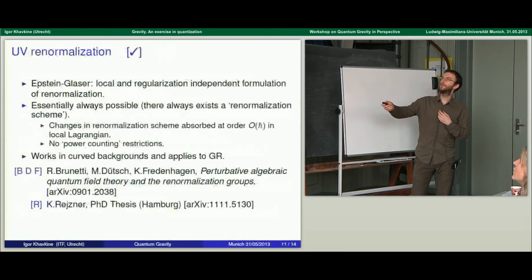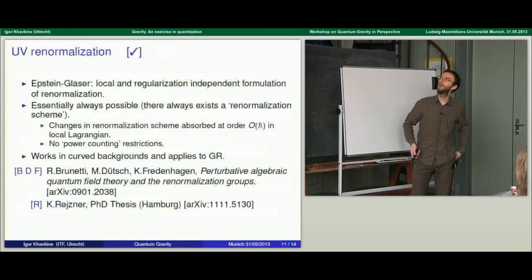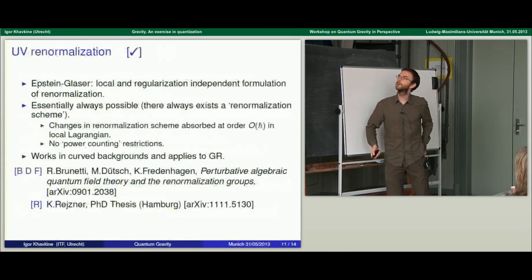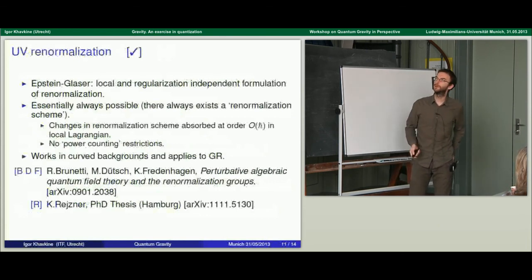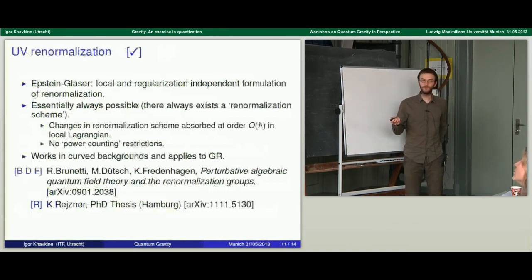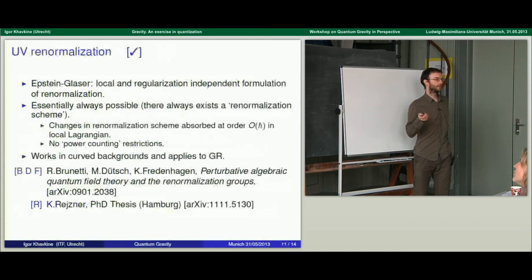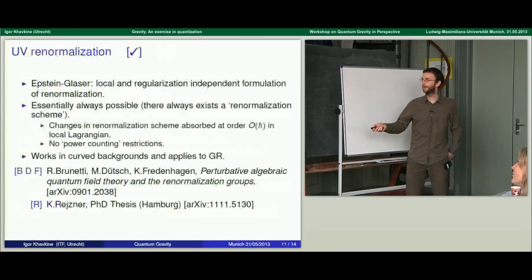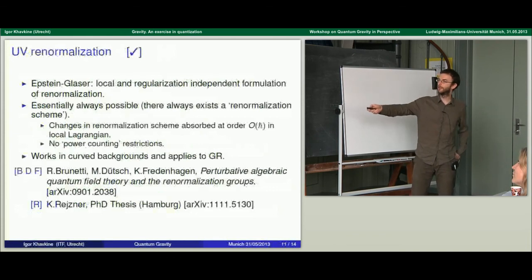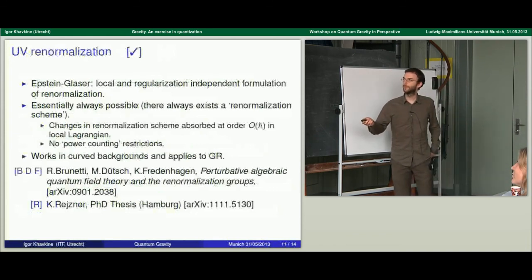The UV renormalization: the basic keyword you need to know is Epstein-Glaser renormalization. It's an outgrowth of work from the fifties by Bogoliubov, Stückelberg, and others, done in the early seventies, and has since been perfected to work in curved spacetime. It says that you can renormalize basically any Lagrangian — in formal perturbation theory — as long as it does not have gauge anomalies. Infrared renormalization is not quite fully imported into the algebraic formulation of quantum field theory, but essentially the basic physical ideas are there.